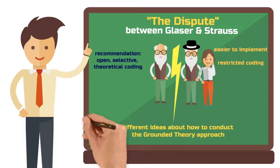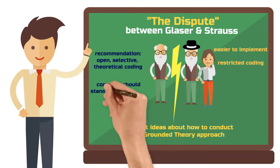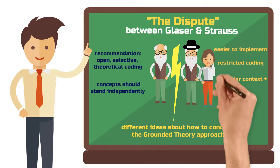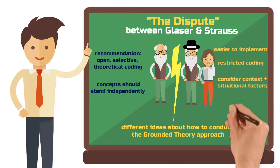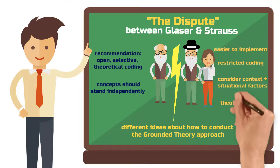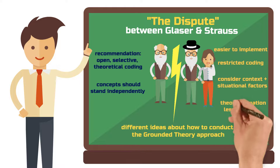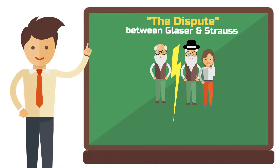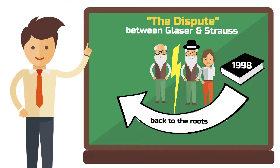For Glaser, it was essential to abstract from the data and create concepts that could stand independently of the context. On the other hand, Strauss emphasized the need to consider the context and situational factors during the analysis. Moreover, theory formation could also be less inductive, guided by existing theories and literature. This was, of course, a no-go for Glaser. In 1998, Strauss and Corbin published another book, where they came a bit closer to the old idea of grounded theory. However, this did not help to settle the dispute.